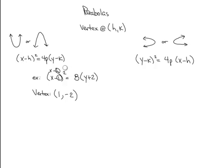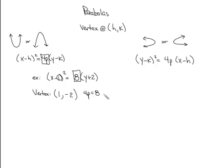Next we identify our 4p. The x − h squared is accounted for, the y − k is accounted for, and the only remaining piece is 8, so 4p = 8. Write down 4p = 8 — you'll see why in a few minutes. Clearly, P equals positive 2.